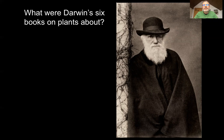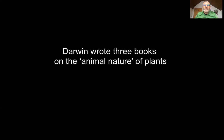So those are Darwin's broad ideas. How can we apply these to plants, and what were the six books he wrote about plants? We can divide his six books perhaps into two triplets: three books influenced by a search for the animal nature of plants — a fascination for similarities between plants and animals — and three books that he wrote on plant reproduction. I'll just give you a very brief taste of the sorts of things he wrote about in these books.